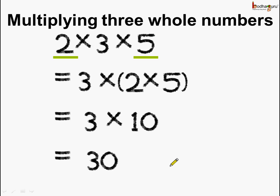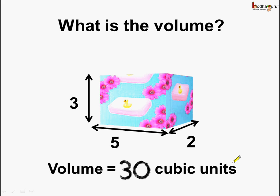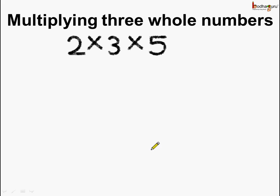What do we see? In all 3 cases, whichever grouping we did of 2 whole numbers, the answer is the same, which is 30. So the volume is equal to 30 cubic units. When we multiply 3 whole numbers, we can group any 2 numbers for multiplication but the answer is always the same.